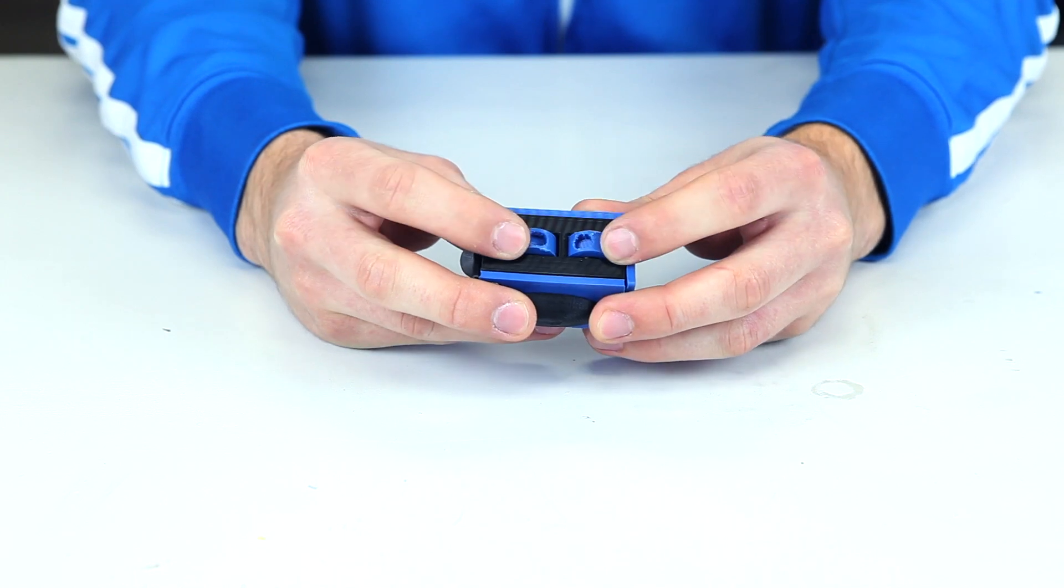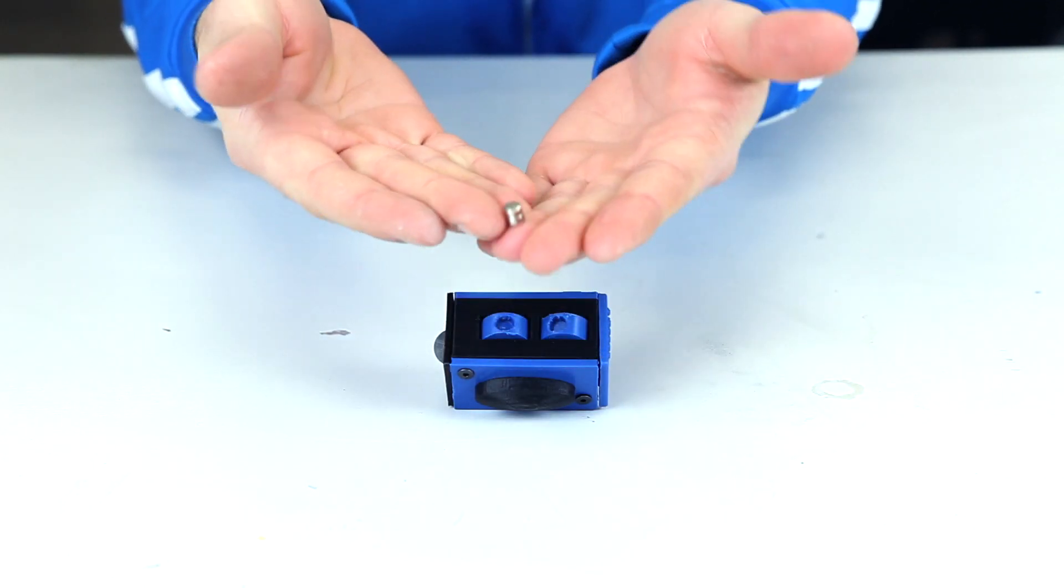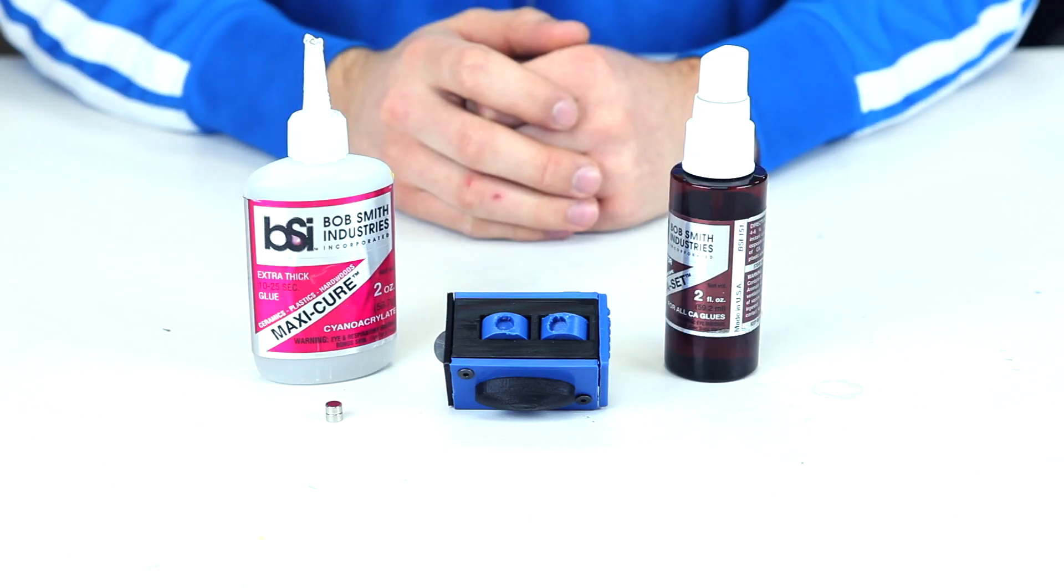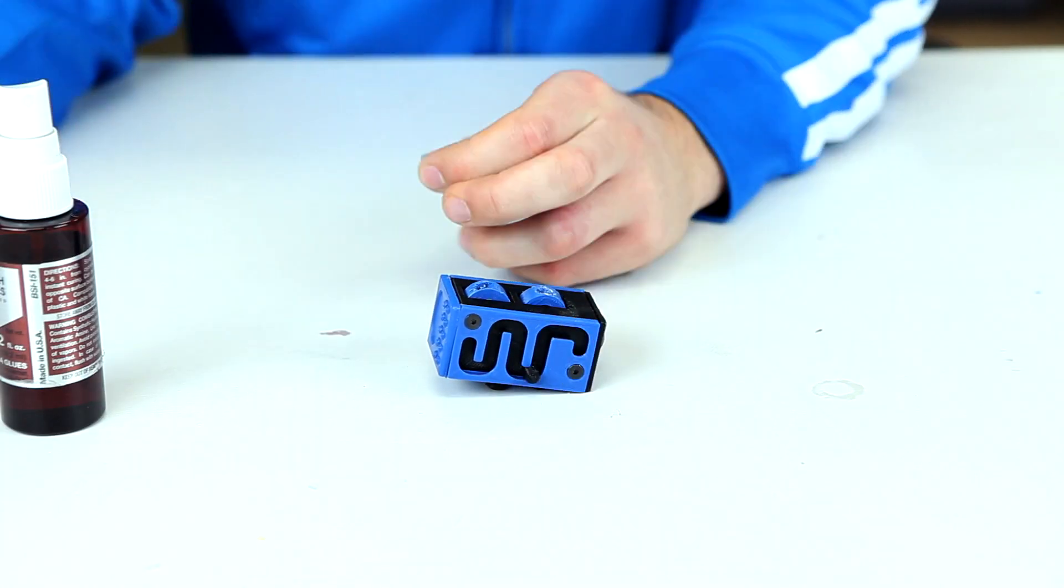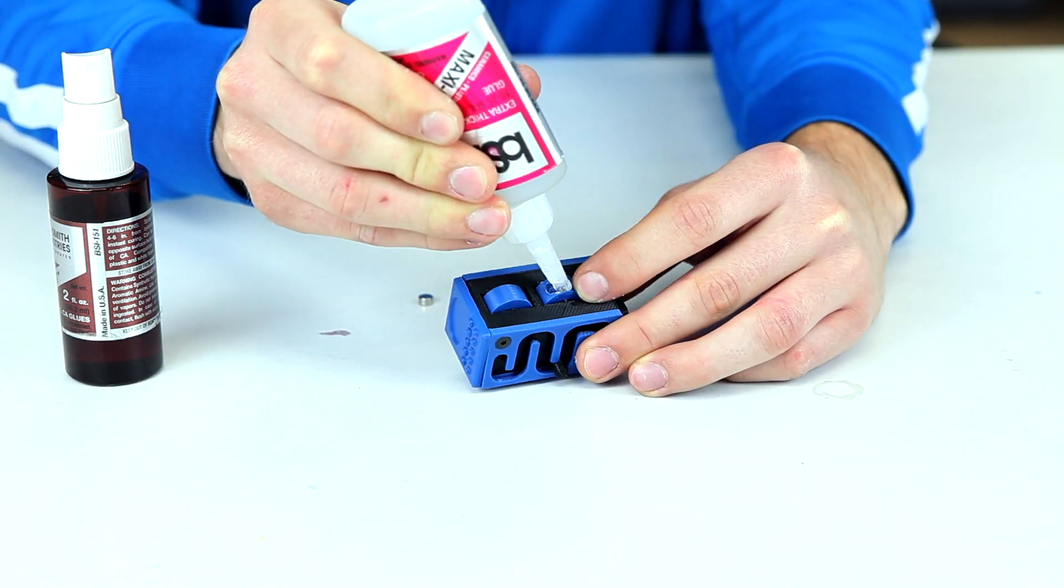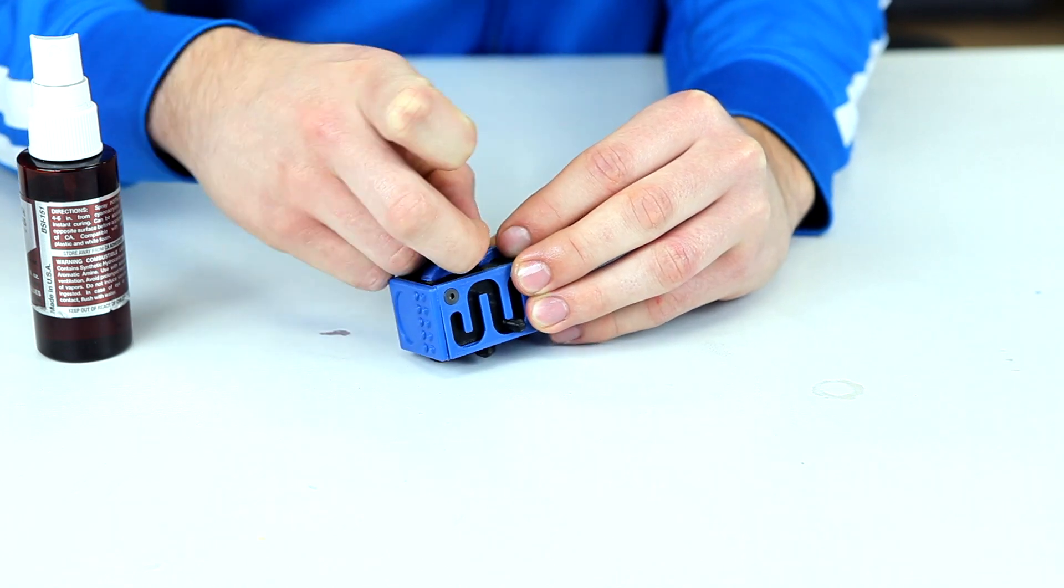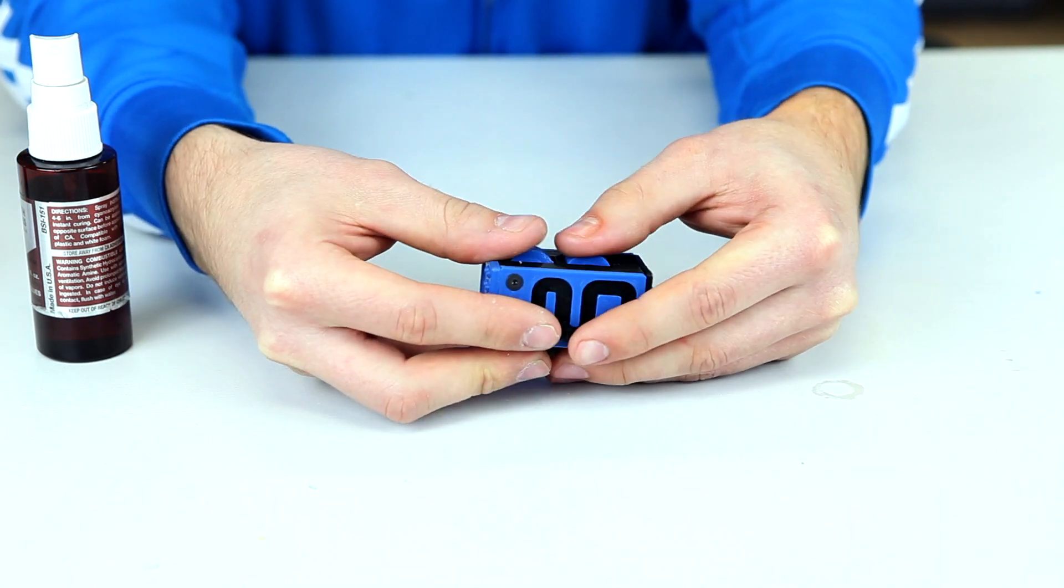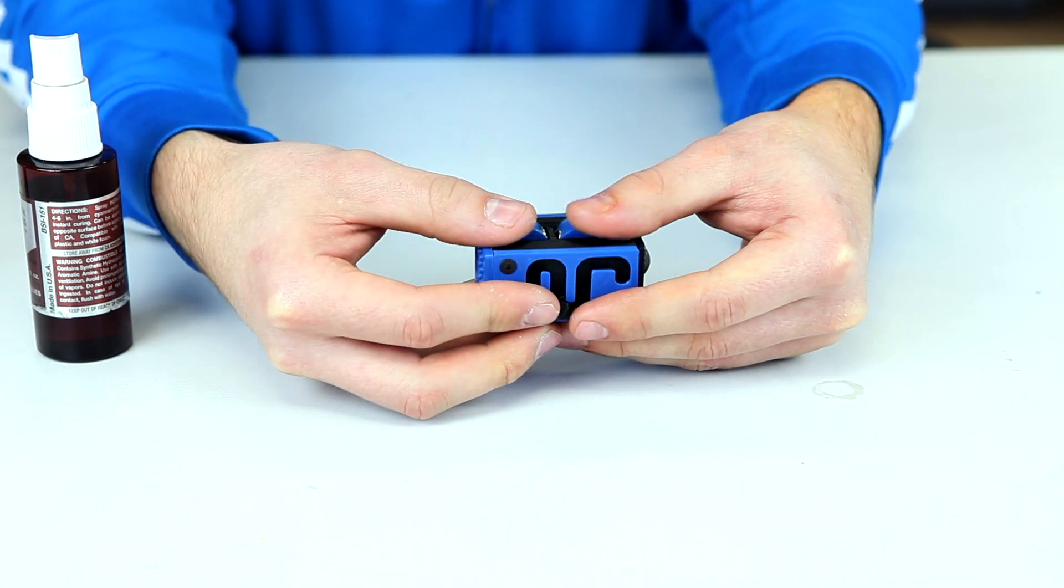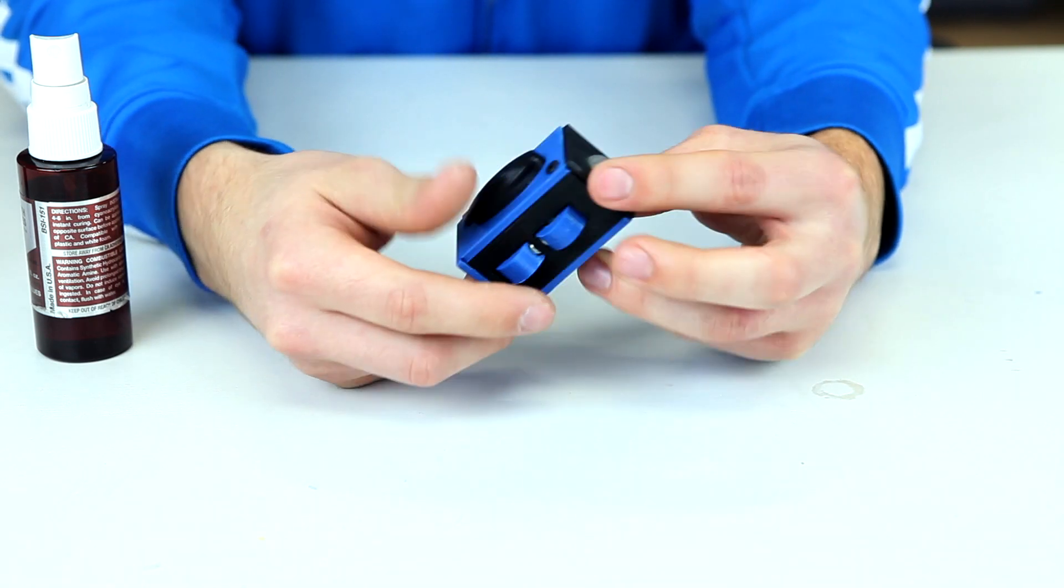For the magnet rings, these will need to be inserted into the main body during the print. You'll need two magnets, cyanoacrylate, and more accelerant. Squeeze in some glue into the hole, and press in the magnets. It may take a little work to get them to fit, depending on your printer's tolerances. You can either attract or repel the magnets, depending on your preference. Personally, I like to have them attract. There you go, little magnet rings.